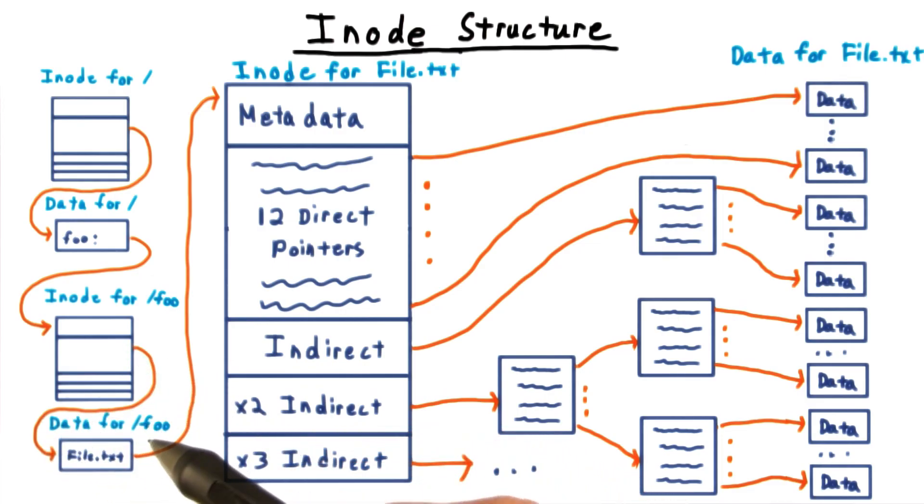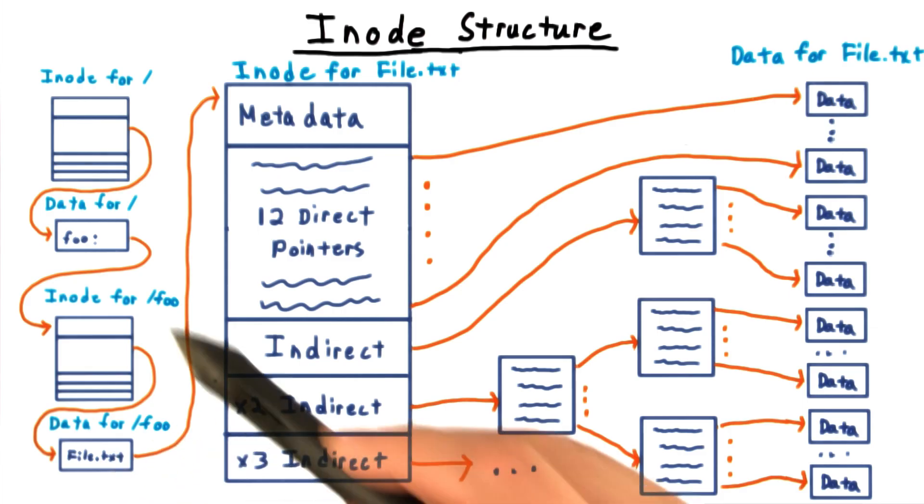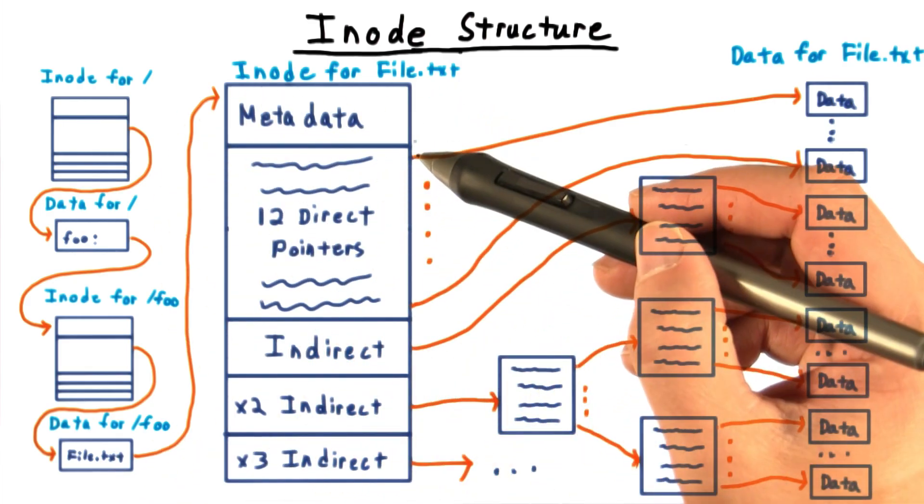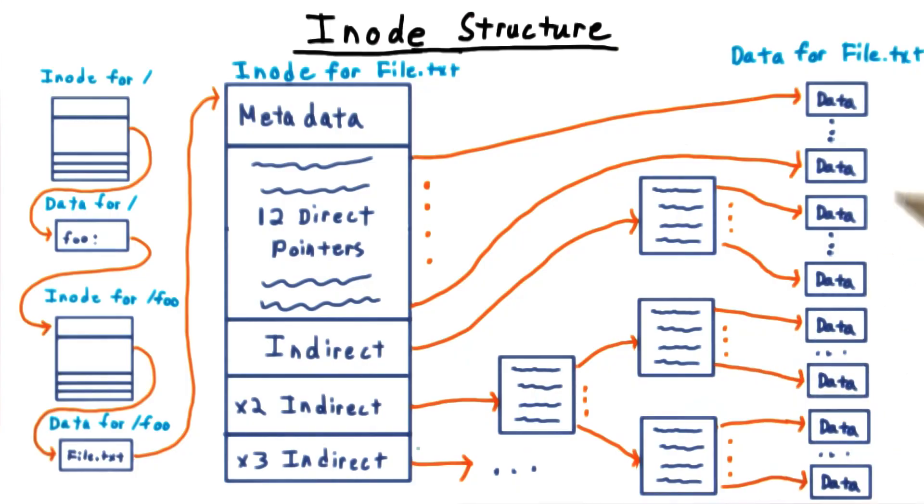Looking in there, we find the contents of /foo, that's a directory. So it's going to map the file name file.txt to the appropriate inode. And then using that inode structure, we're able to piece together the data that we need.